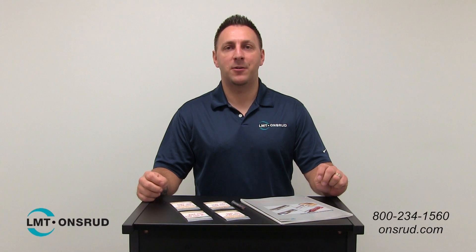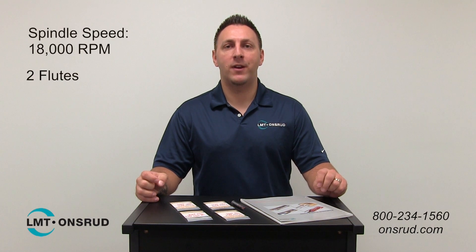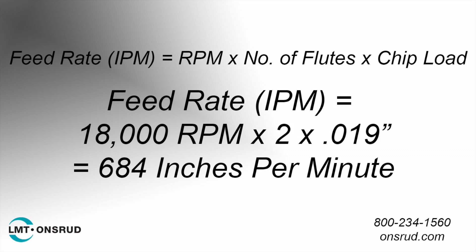What we need to do now is establish a spindle speed for routing, and most common is 18,000 RPM. So let's go ahead and use 18,000 RPM as our spindle speed. We also know this cutter has two flutes, and we now know that the recommended chip load range is 0.019 to 0.021. Let's take the smaller chip load first. Feed rate equals RPM times the number of flutes times the chip load — so 18,000 RPM times 2 times 0.019 equals 684 inches per minute.